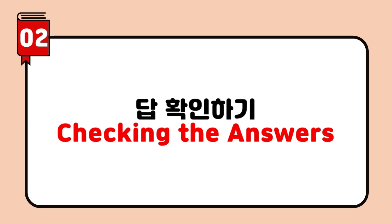Let's check the answers. Let's find out what the answers are. Let's quickly run through the answers. The answers are on page 20. Check your answers on page 20. You can find the answers on page 20. What's the answer to number 1? Call out the answers starting from number 1. Could you read out the answer to number 2? Was the answer to this question A or B? What did you pick for number 2? What did you say to number 2? What have you written for number 2? What do you have for question number 2? What did you answer to question 6?